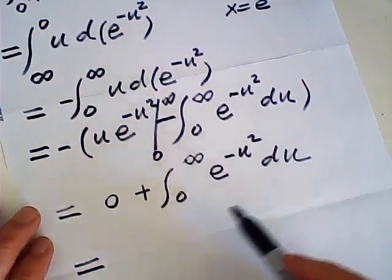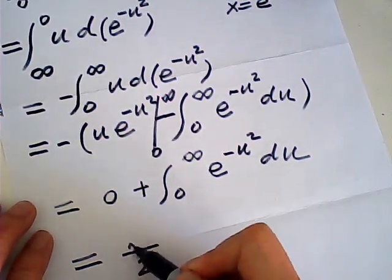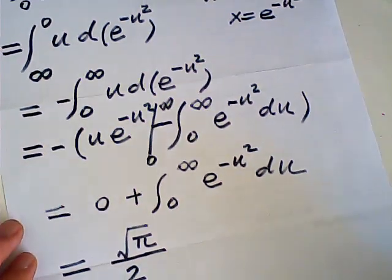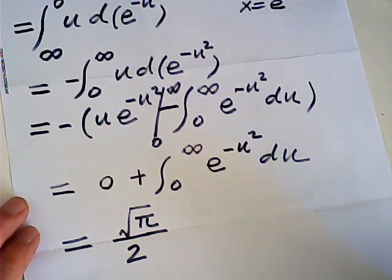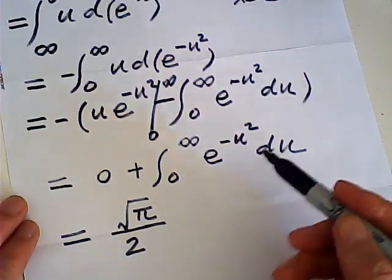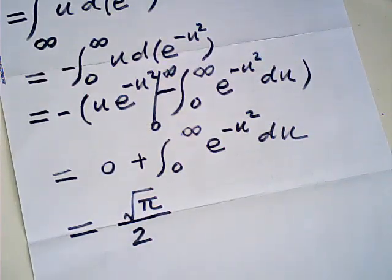This is a well-known Gaussian integral. This is equal to one-half square root of pi. Very simple, very easy. We just need the Gaussian integral. Thank you for watching.